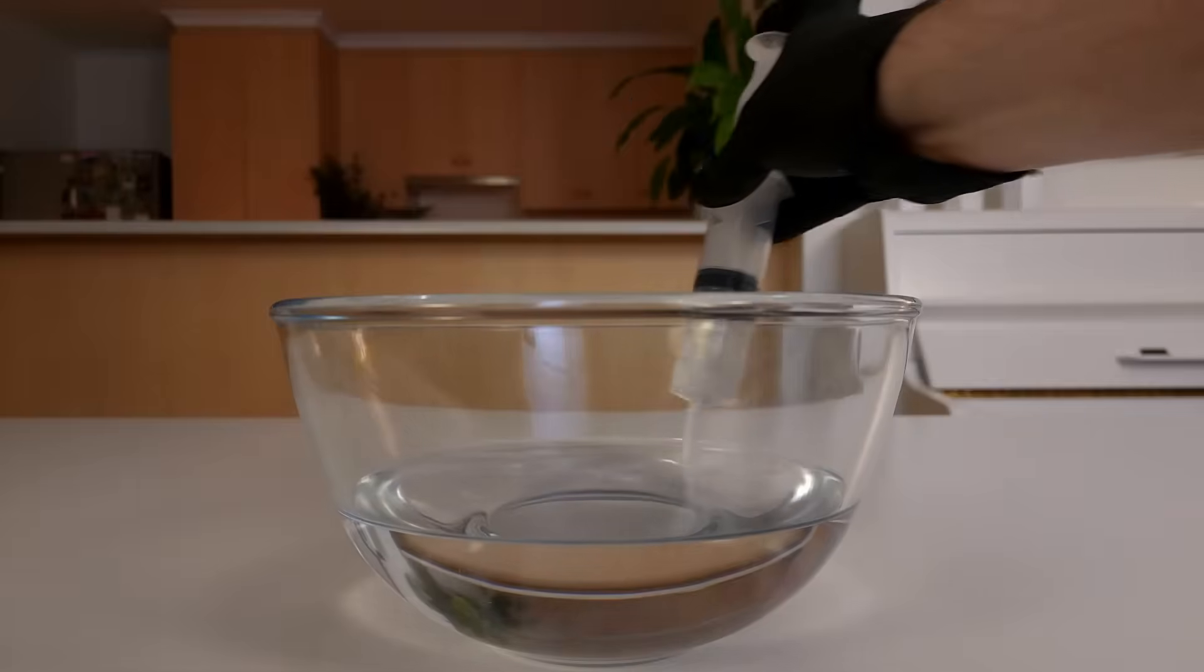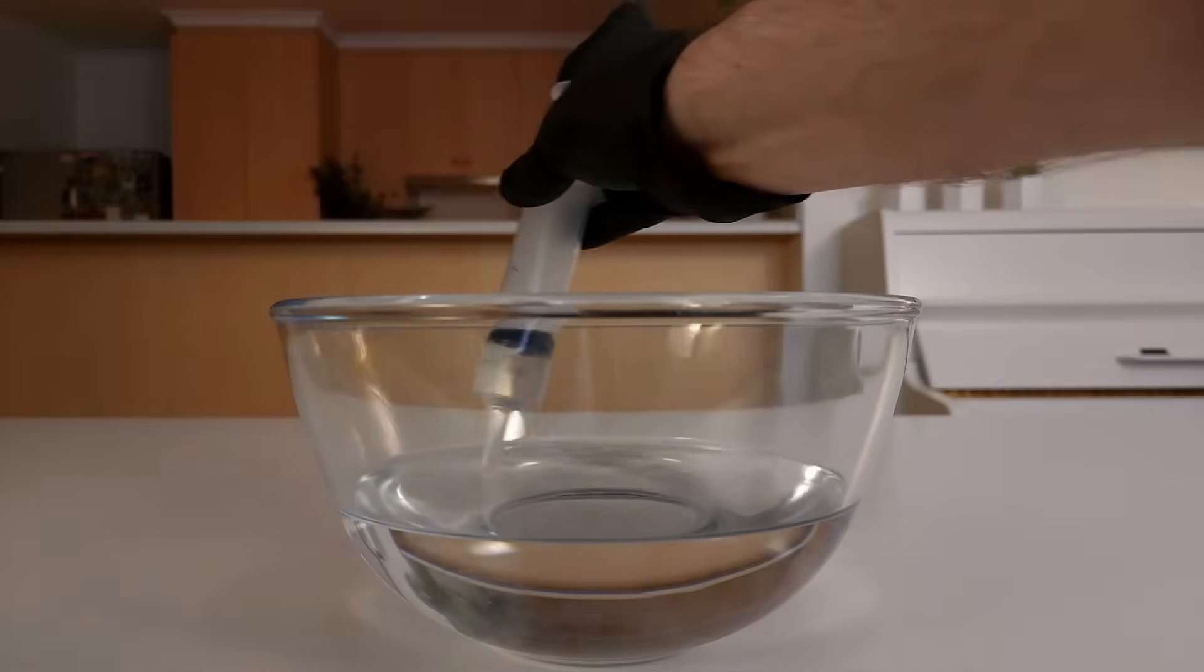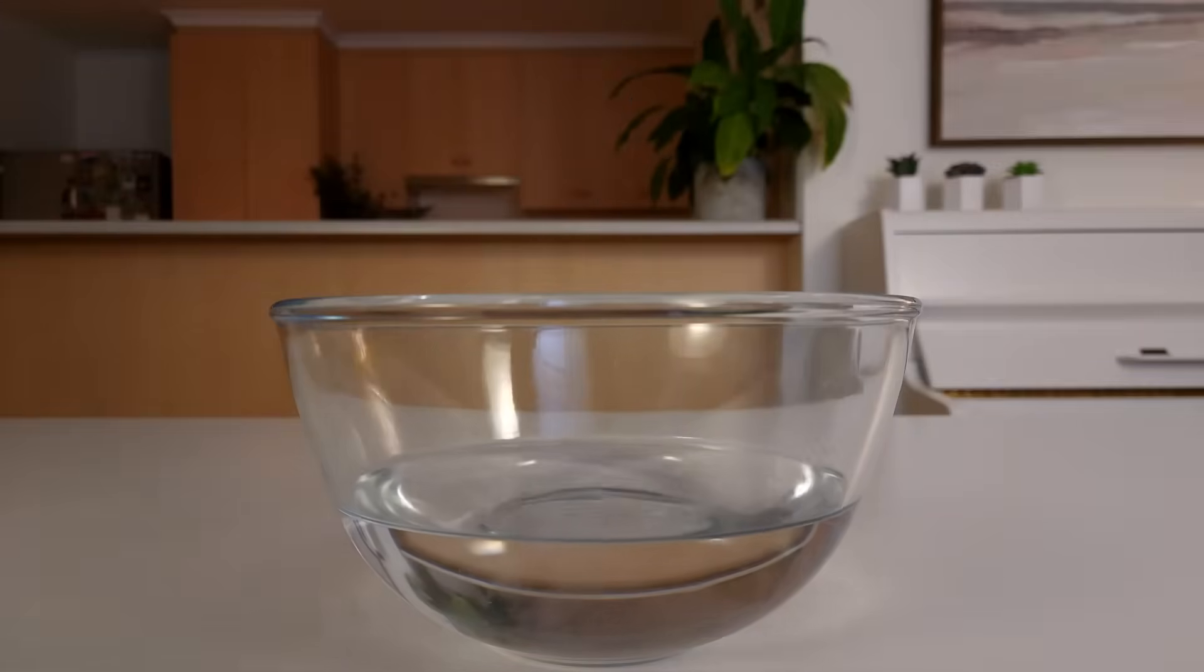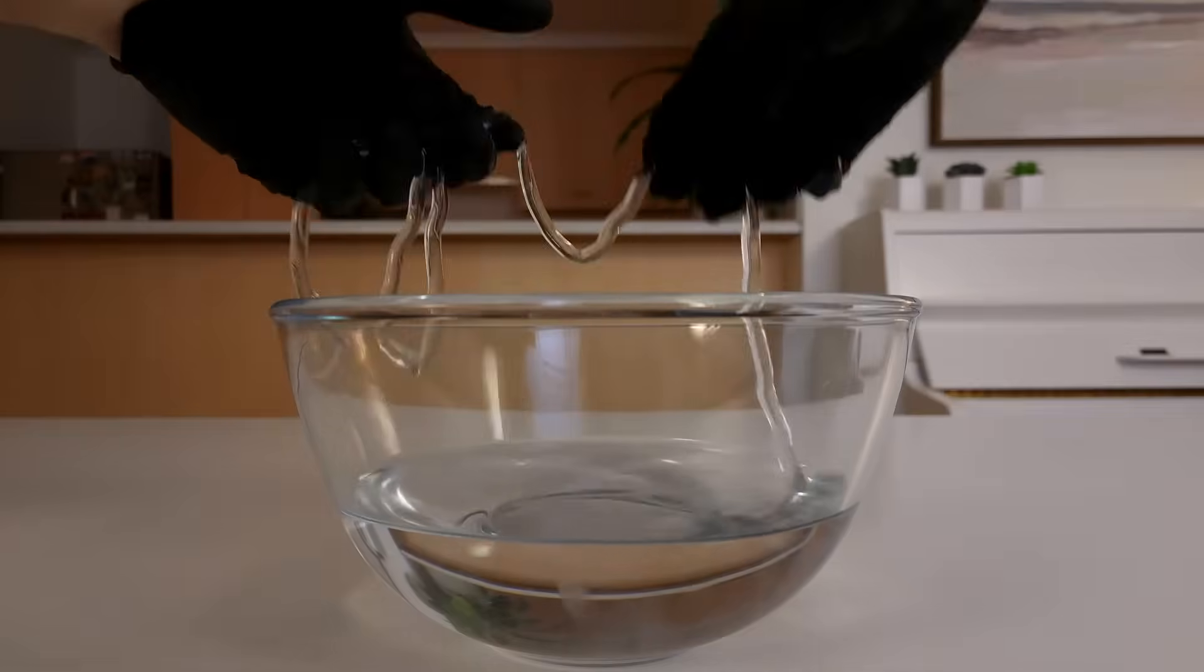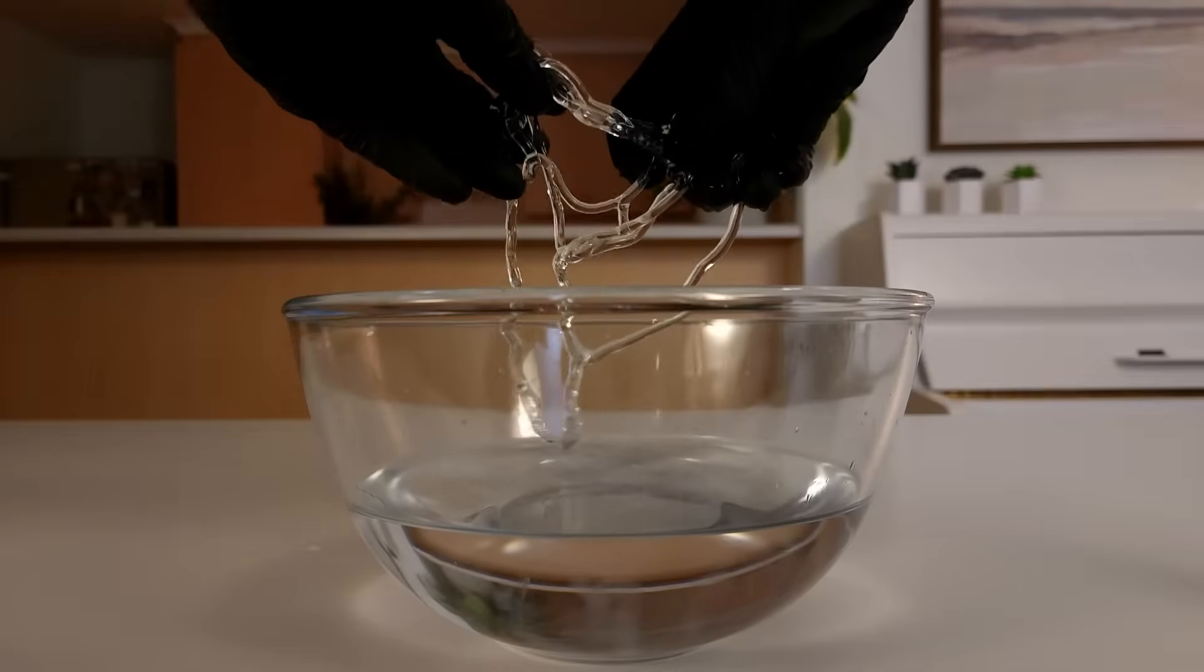This step is pretty simple, but really cool. Squirt the sodium alginate solution into the bowl, wait for a few seconds, and you get instant worms! I use the syringe to make these worms, and the sauce bottle to make these worms.